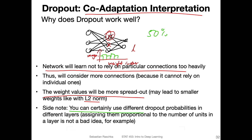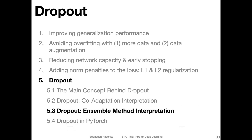So this is one explanation for why dropout may perform well: it puts less emphasis on particular nodes, making the network more robust to fluctuations in the input. In the next video, I want to briefly talk about another explanation concerning the ensemble method interpretation.